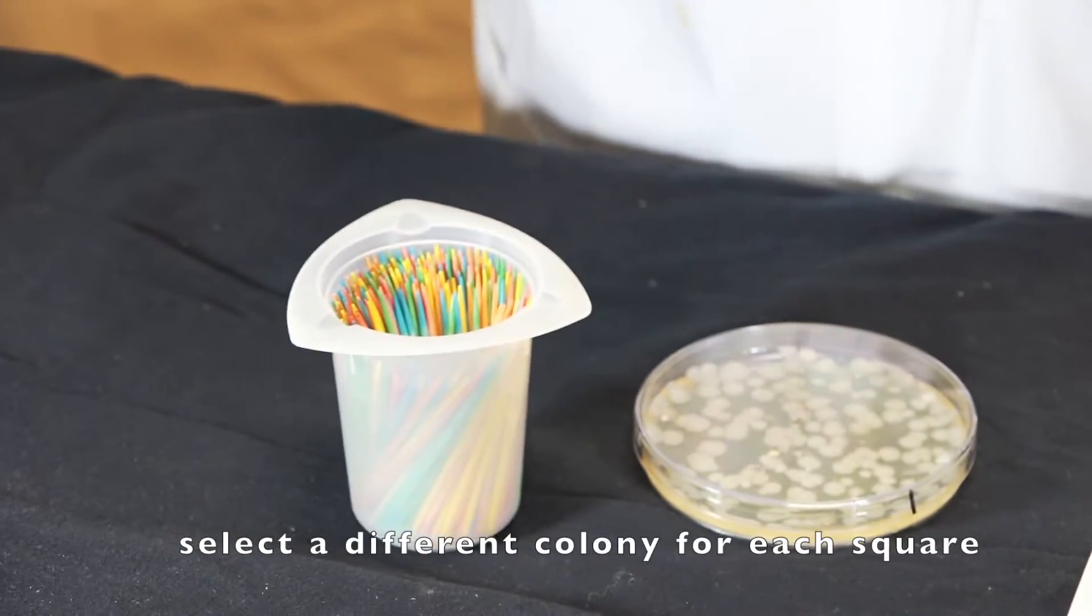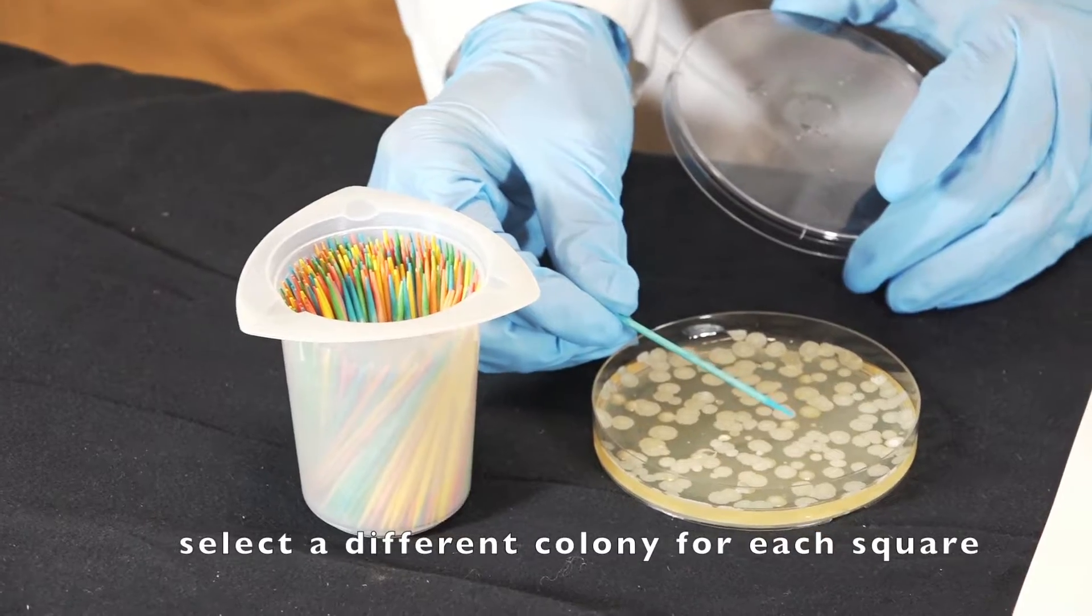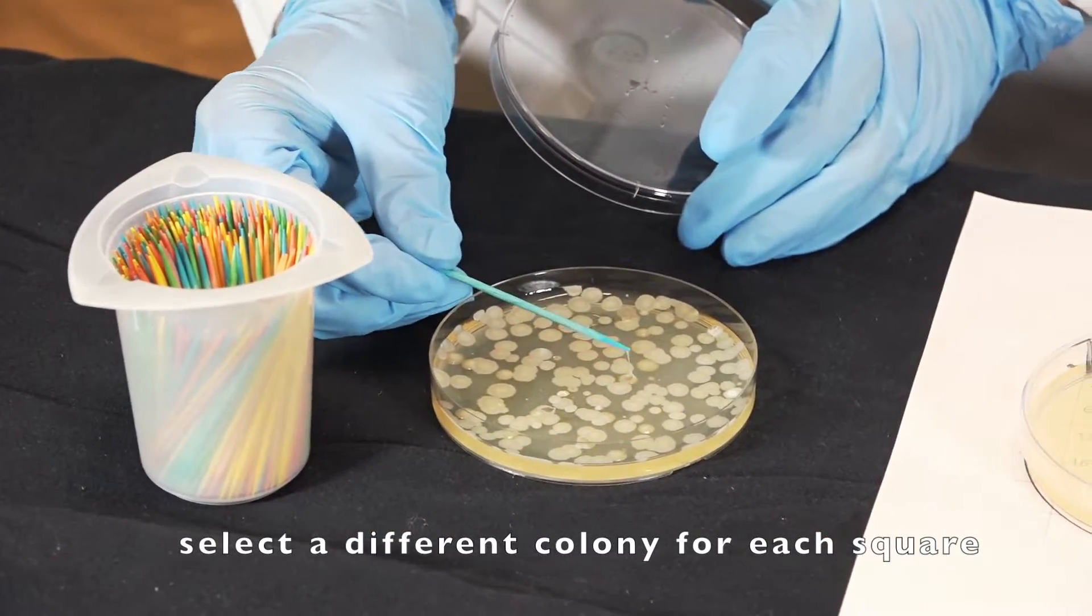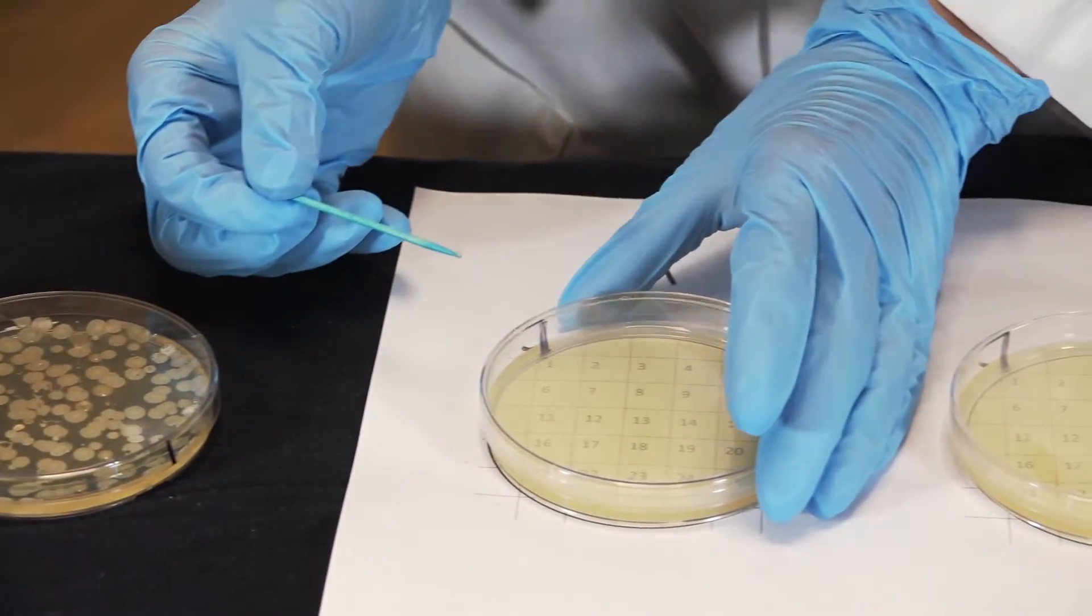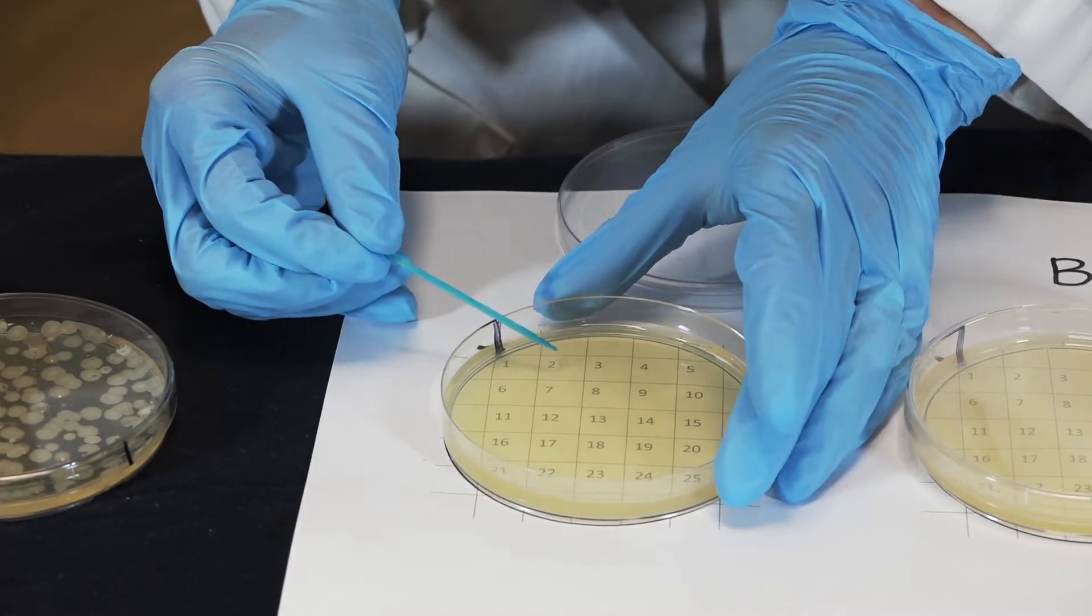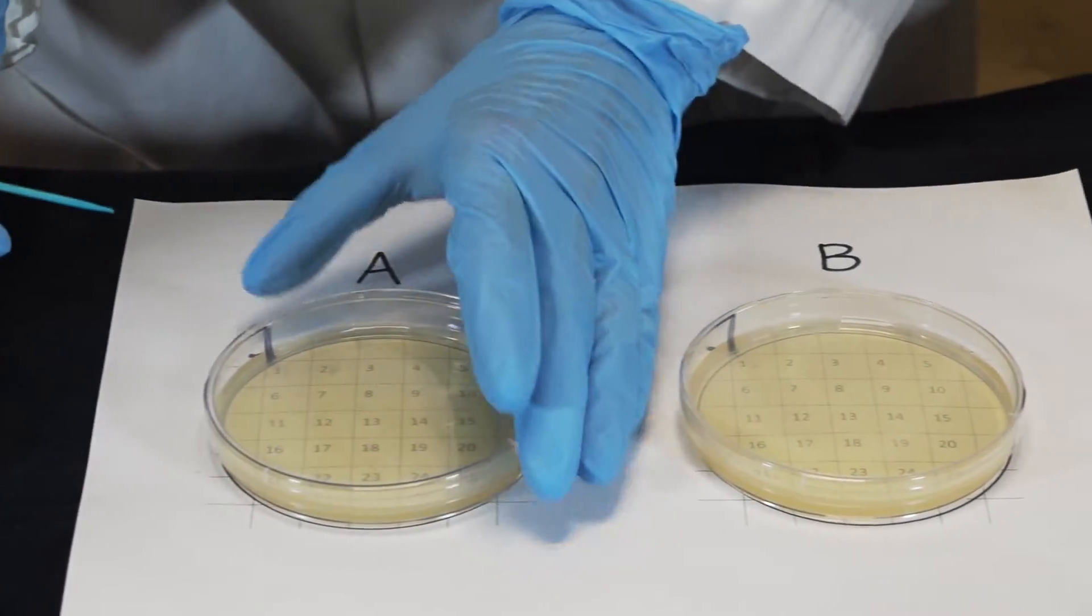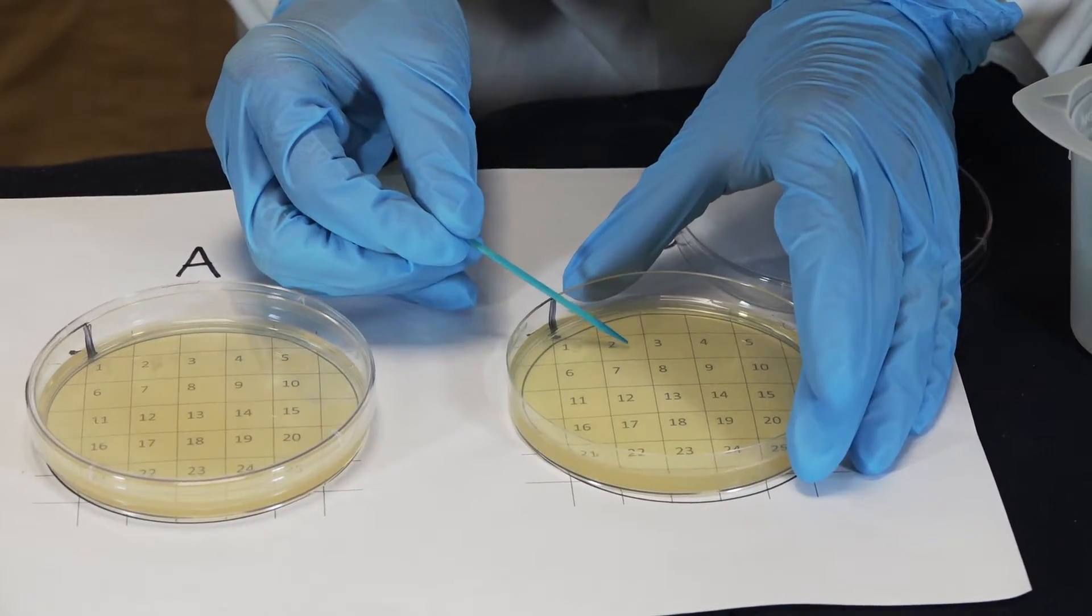I'll get a new sterile toothpick and pick another colony from this plate. And inoculate square two on plate A and square two on plate B.